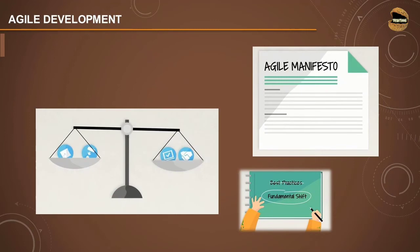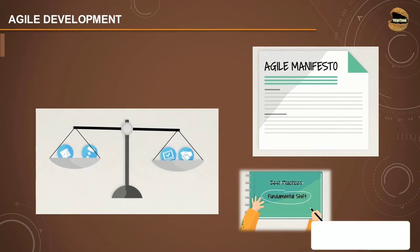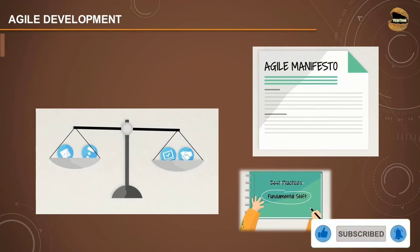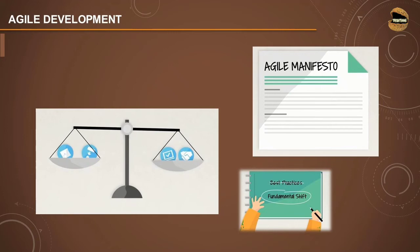It was not just about creating best practices — it was a fundamental shift, moving from one stage to another and creating something which changes history. Comparisons were created to identify what was really not important as part of the process where time was wasted. A manifesto was created showing that certain values are more important than others, redefining the outcomes in a different manner. And that's where Agile came into picture.